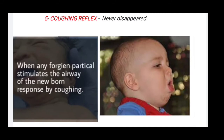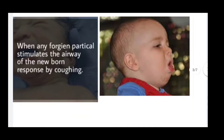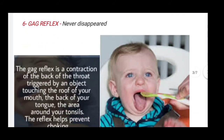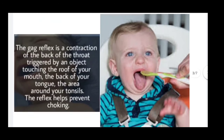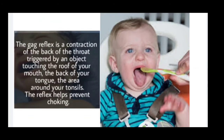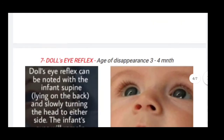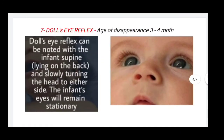The gag reflex also never disappears. The gag reflex is a contraction of the back of the throat, triggered by an object touching the roof of your mouth, the back of your tongue, and the area around your tonsils. This reflex helps prevent choking.